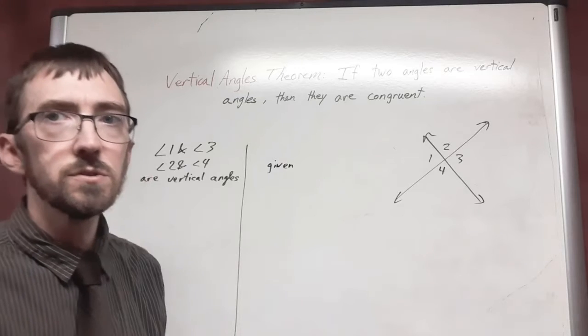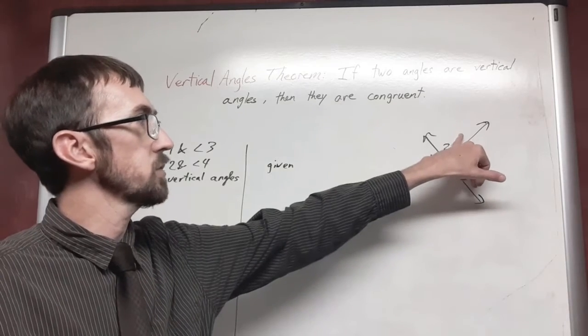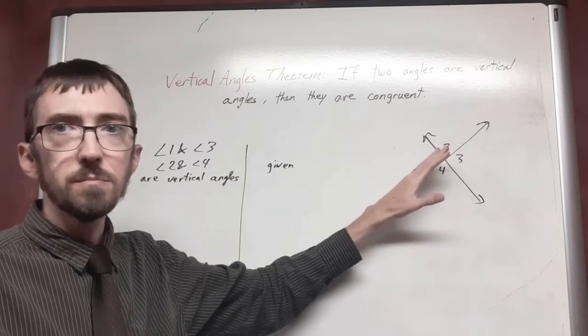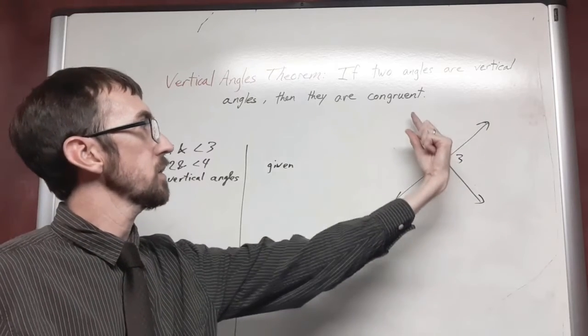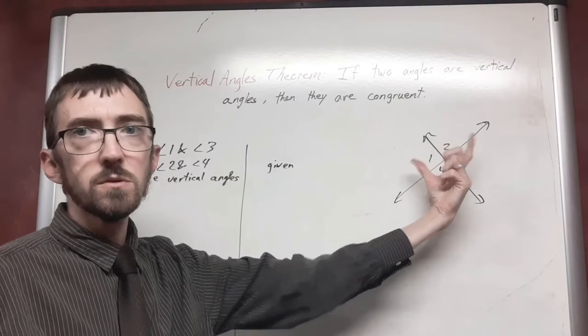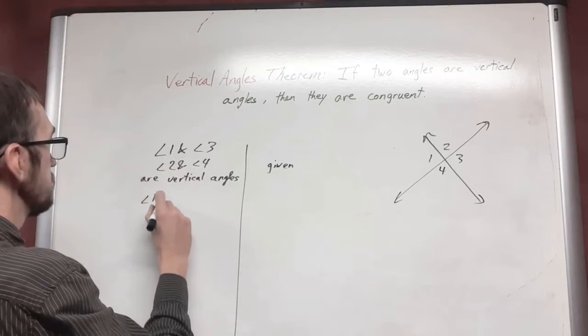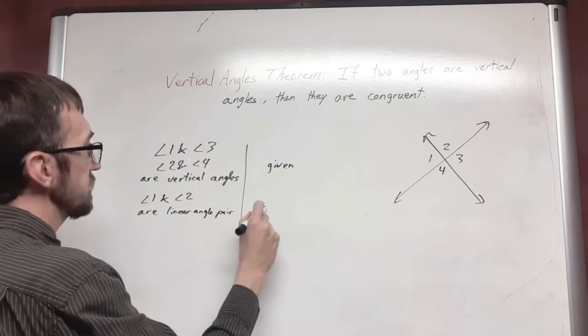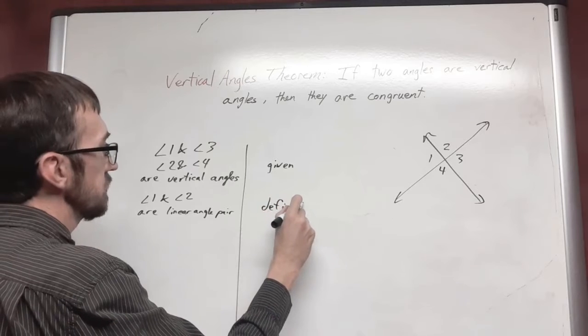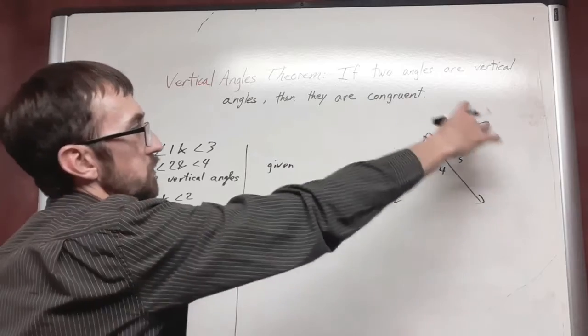The next thing that I want to do is I want to observe what is going on in my diagram. Notice that one and two are side by side. They have this straight line that makes up the base of them, and they are split by this ray. So this is an adjacent pair of angles that is linear. And this is by the definition of linear angle pairs.